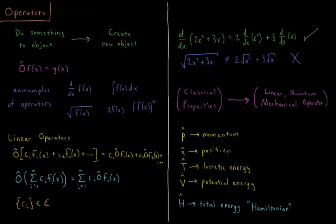Before we solve the Schrödinger equation for any specific cases, we need to take a little sidebar and discuss operators. An operator is something that does something to an object to create a new object. Usually we're interested in terms of functions, specifically functions of x. Some operator O, represented by a capital letter with a caret hat on top, acting on f(x) is going to return g(x). This is just anything that acts on a function and gives us a new function.